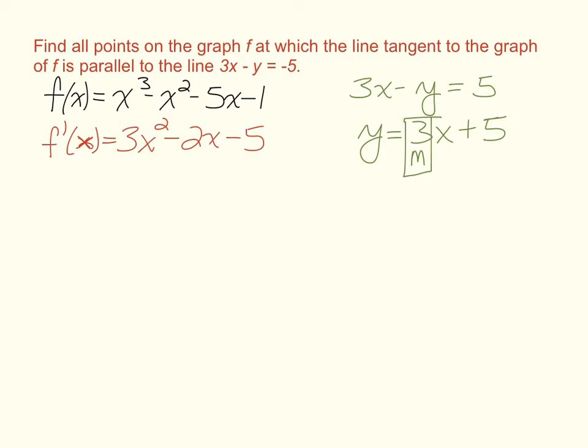Usually how it works is when you substitute a number in for x, you'll get back some slope. This will equal some slope of a tangent line. But in this scenario, we know the slope of the tangent line we are looking for. The slope is supposed to be 3.